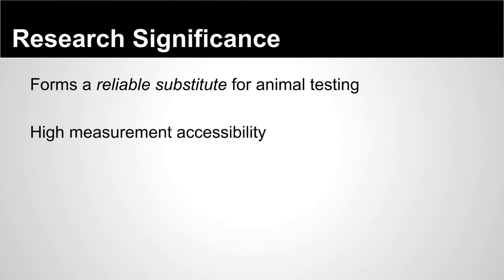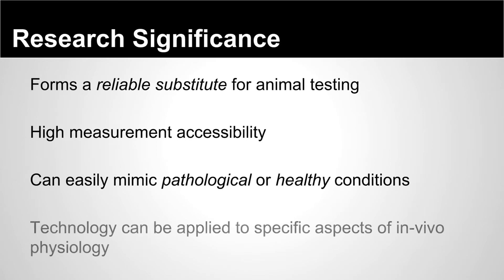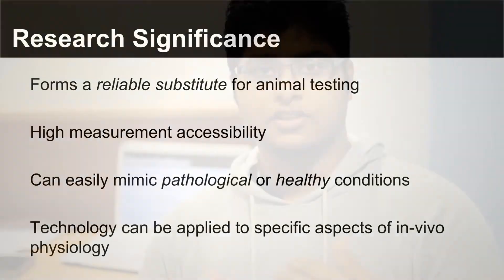Secondly, the Human on Chip system has various sensors attached within it which record real-time data. Also, this system can simulate a variety of body conditions, such as a diseased or a healthy condition. Finally, this system can target and be applied to specific characteristics of in vivo physiology, such as a specific organ or a multi-organ system.